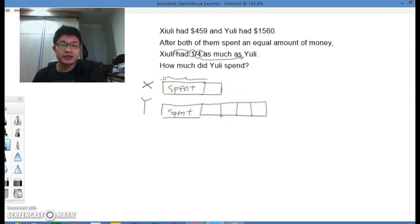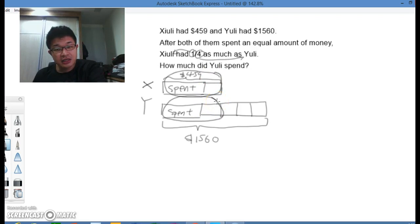So over here we can see that this is the amount of money that Xuli had at first, and it's actually $459. And then this amount of money that Yuli has is actually $1560. And from here it's very clear. Most students would be able to see that this is actually hiding here. Which means this $459 would be the same value here, $459. Which means I am therefore able to find this.